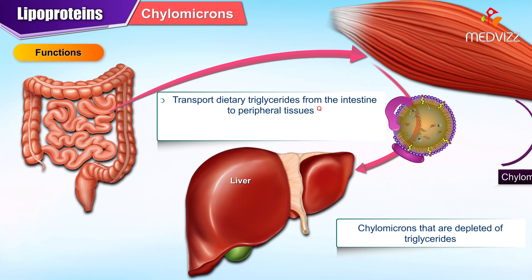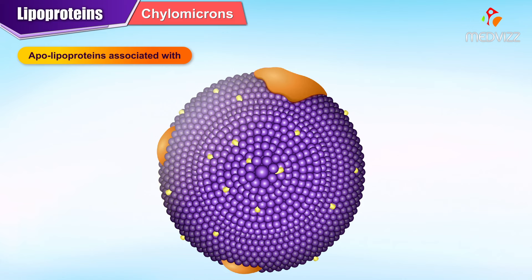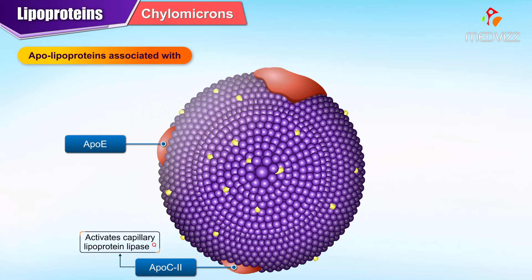Chylomicron remnants are chylomicrons that are depleted of triglycerides, and they transport cholesterol to the liver in the form of chylomicron remnants. Apolipoproteins associated with chylomicrons are ApoE, ApoC2 which activates capillary lipoprotein lipase, and ApoB48.